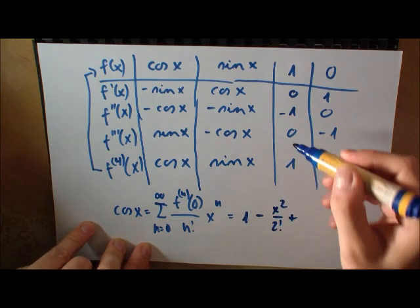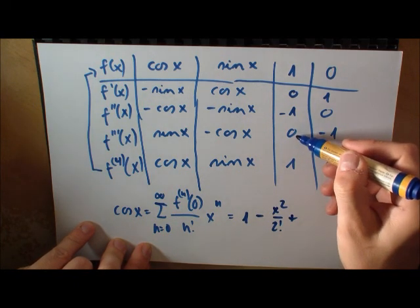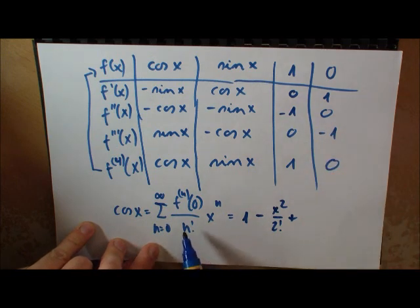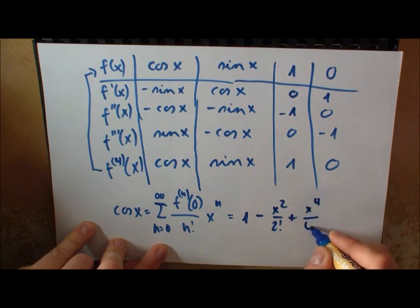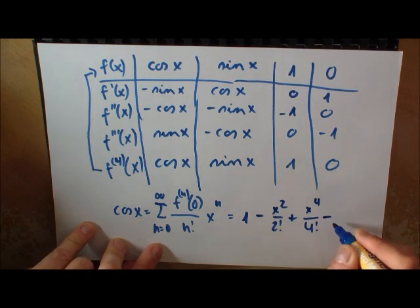Plus x to the three disappears, so we won't have an x cubed. And then we come to this, which is just x to the four, four factorial. And if you go on.